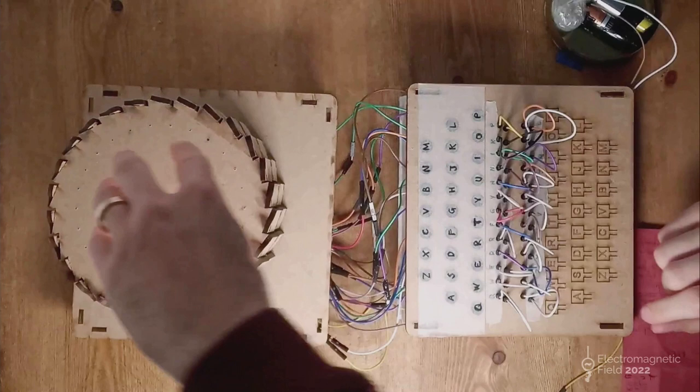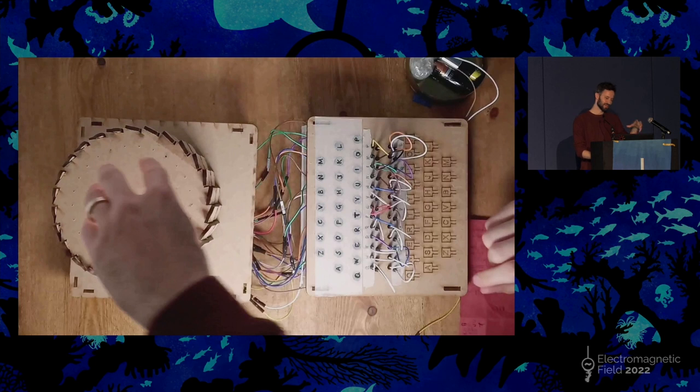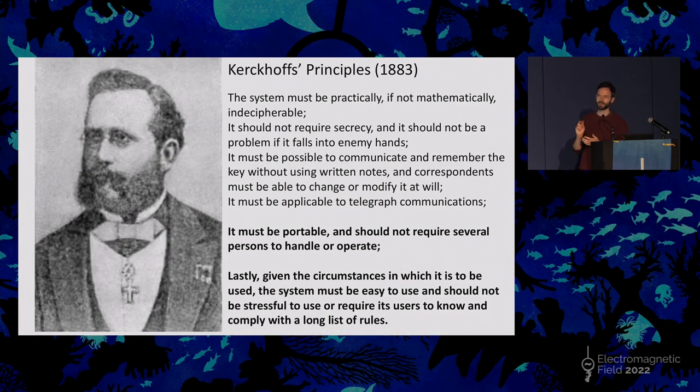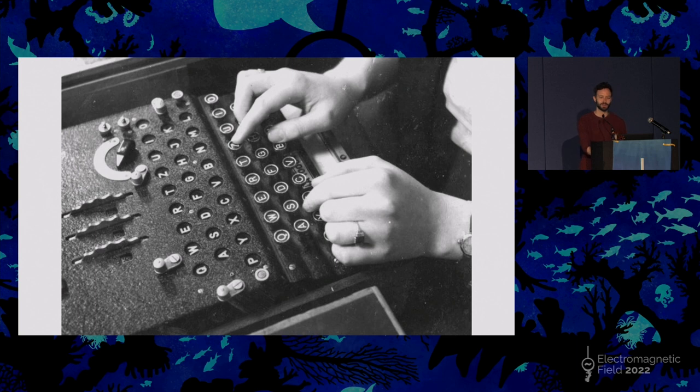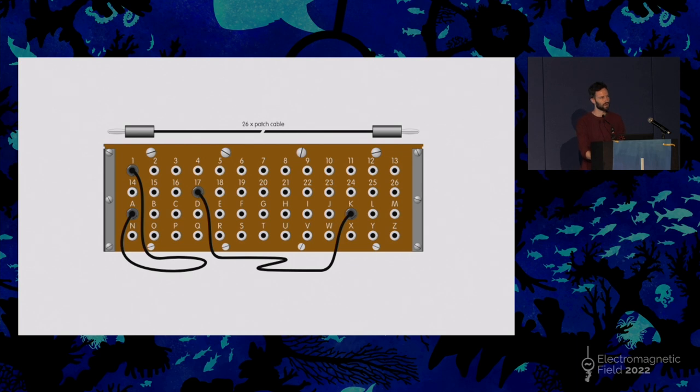I wasn't quite happy because it's a bit of a mess. I wanted to redesign it and make it simpler, make it more robust. I realized that I'd violated two of Kirchhoff's principles. Kirchhoff was a Dutch cryptographer who said that in order for a cryptographic scheme or protocol to be usable, it has to be portable. It shouldn't require several people to handle or operate. I realized I'd kind of messed that up because it required more than three hands to carry it around. Also it should be easy to use and shouldn't be stressful. I was getting stressed out and realized I'd violated this principle as well. In fact, this is one of the things that caused the German military to be exploited. The fact that these things were quite difficult to use. Human error led to various vulnerabilities that the folks at Bletchley Park could exploit when they were trying to crack the Enigma code.